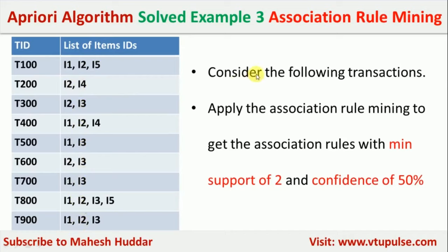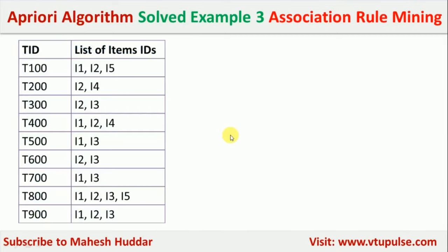Now we need to apply the association rule mining — that is the Apriori algorithm — to get the association rules with minimum support of 2 and confidence of 50%.